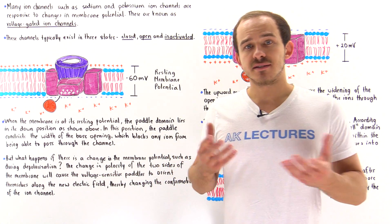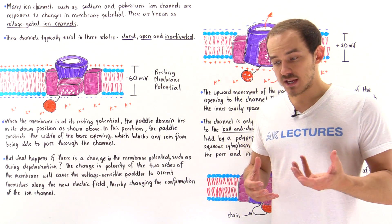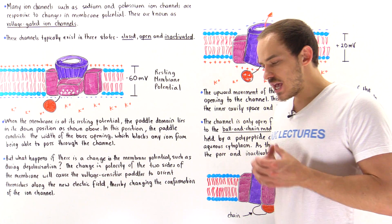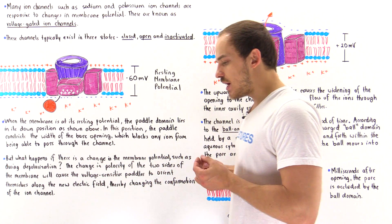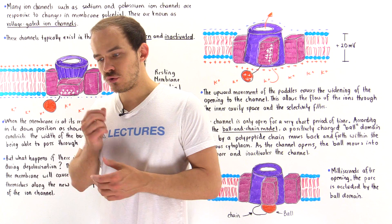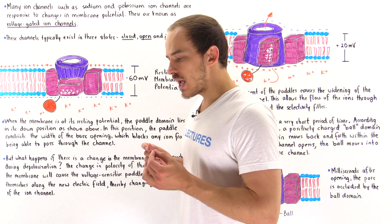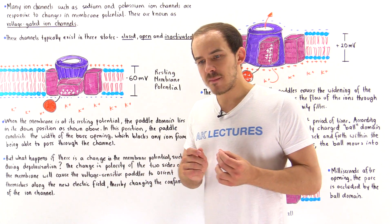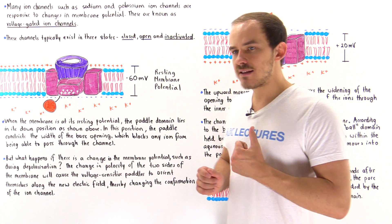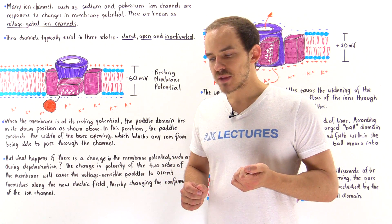Many ion channels that exist inside our body, for example sodium ion channels and potassium ion channels, actually respond to changes in the electric potential difference — the voltage difference — between the two sides of the membrane. These special types of ion channels are known as voltage-gated ion channels.